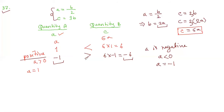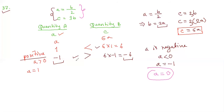We got the opposite direction in the second case. In the first case, quantity B was greater; in the second case, quantity A is greater. Let's check one more: A can also be 0. If A equals 0, quantity A is 0, and quantity B is 6 times 0, which is also 0. So quantity A equals quantity B.